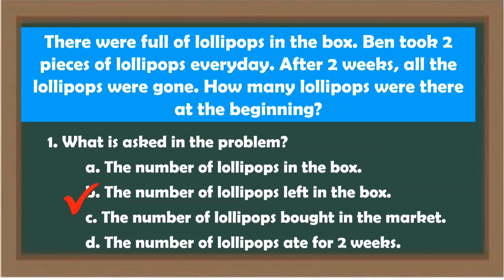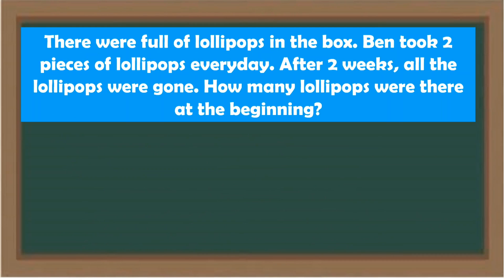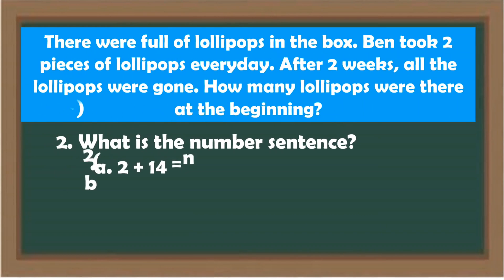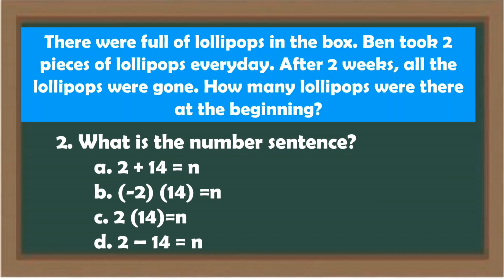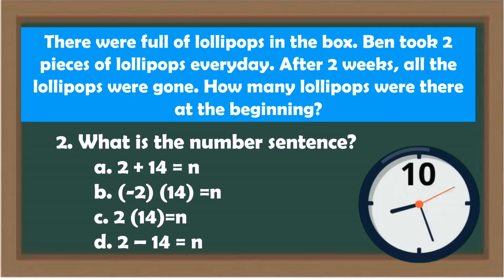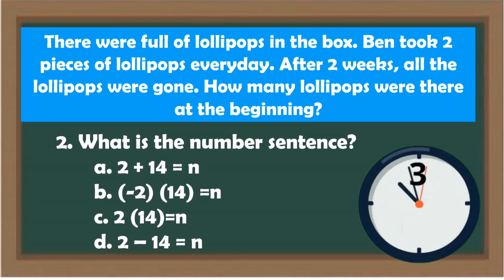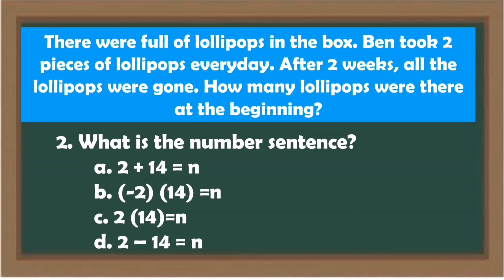The answer is letter A. Next, number 2 — what is the number sentence? A. 2 + 14 = N. B. −2 × 14 = N. C. 2 × 14 = N. D. 2 − 14 = N. Our answer is letter C.